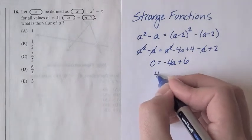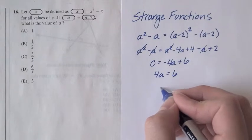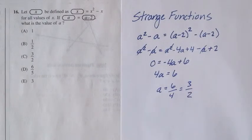Bring the negative 4a to the other side, 4a is equal to 6. a is equal to 6 over 4. Don't forget to simplify your fraction: a is equal to 3 halves.